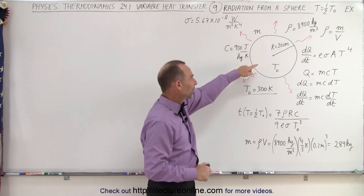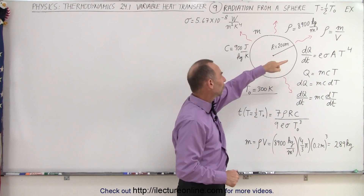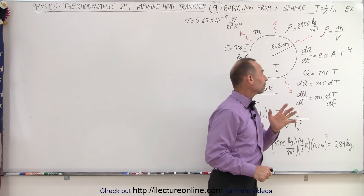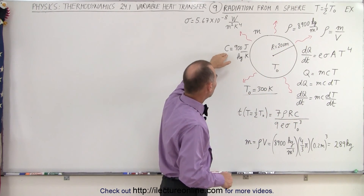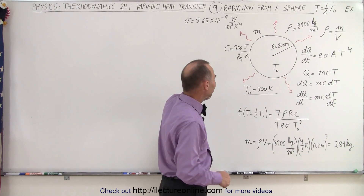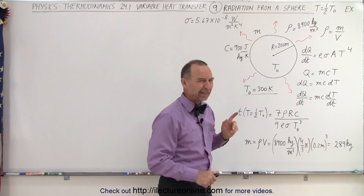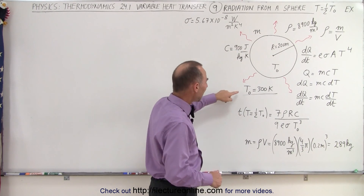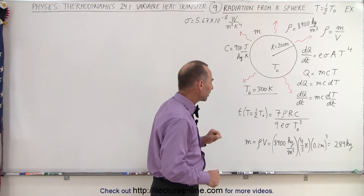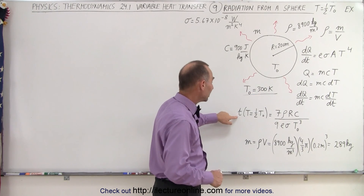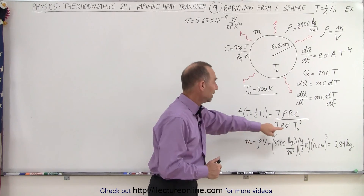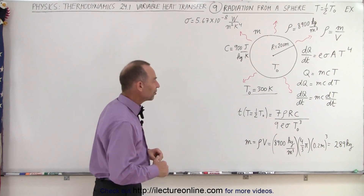We have a sphere of radius 20 centimeters with a density of 8,900 kilograms per cubic meter and a specific heat of 900 joules per kilogram times kelvin. I believe that's copper if I'm not mistaken. And let's say that we start with an initial temperature of 300 kelvin, because the amount of time it takes does depend on the original temperature of the object.